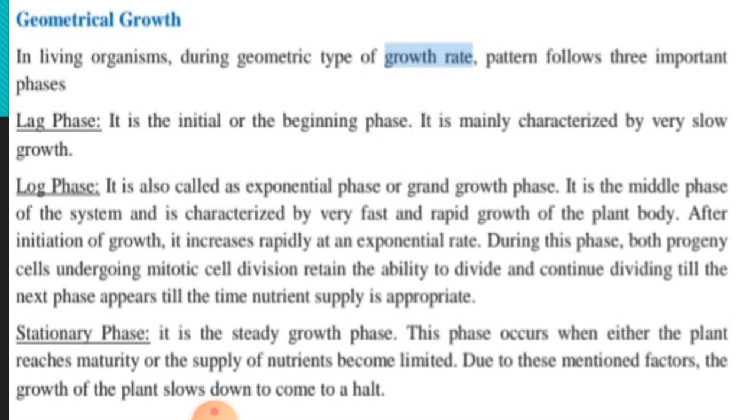Log phase is also called exponential phase or grand growth phase. It is the middle phase of the system and is characterized by very fast and rapid growth of the plant body. The growth in the log phase is very fast. After initiation of growth, it increases rapidly at an exponential rate. During this phase, both progeny cells undergo mitotic cell divisions, retain the ability to divide, and continue to divide until the next phase, till the time when nutrient supply is appropriate.